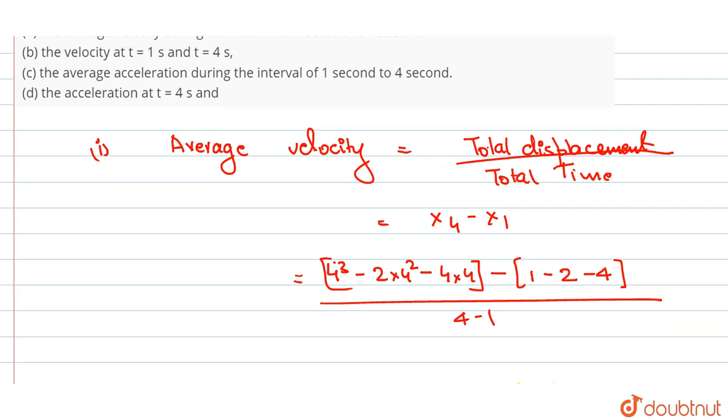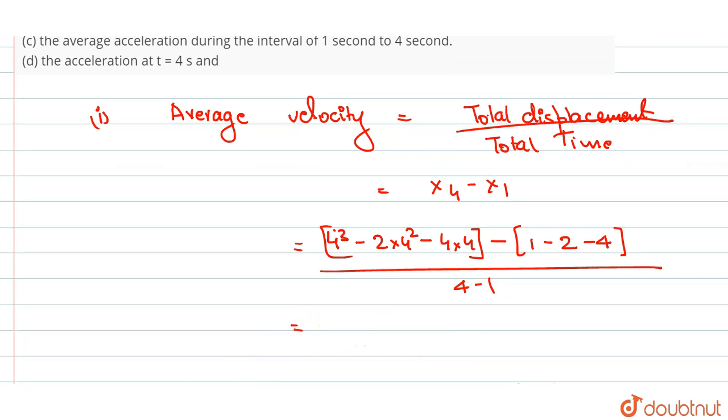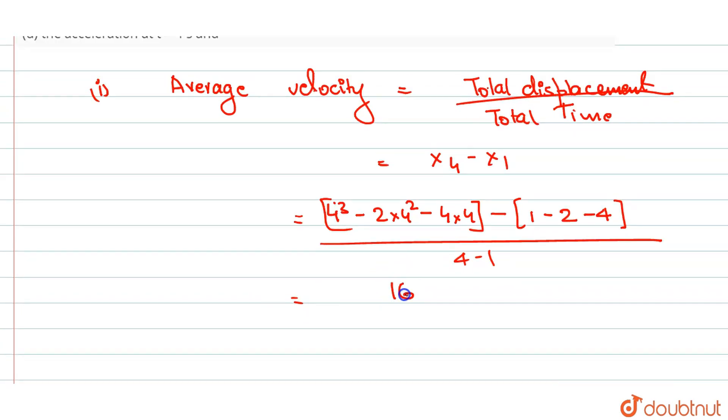This equals 64 minus 32 minus 16, minus 1 minus 2 minus 4, all over 3. This gives us 16 plus 5 over 3, which equals 21 by 3, equals 7 meters per second. Okay, so first part solved.